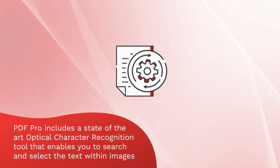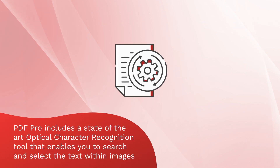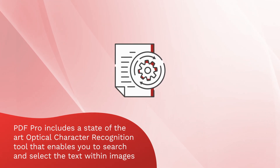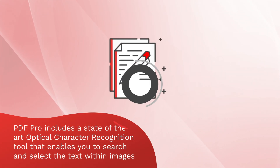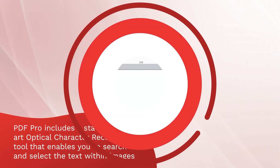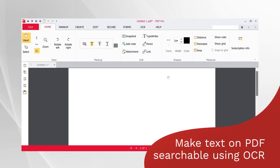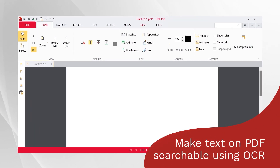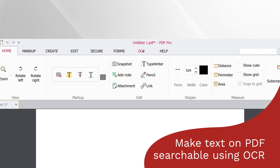PDF Pro includes a state-of-the-art optical character recognition tool that enables you to search and select the text within images. To make the text in your PDF searchable, you will need PDF Pro plus OCR.